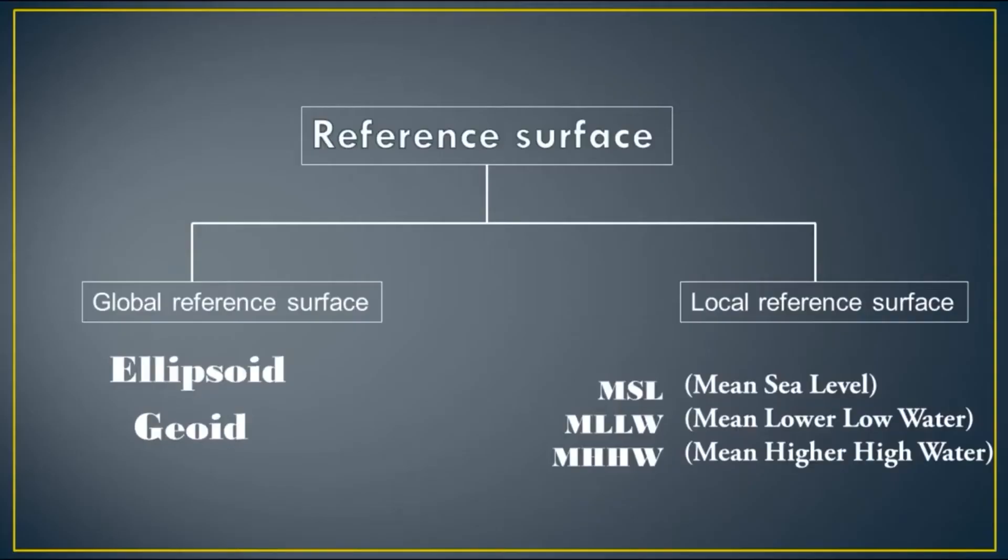In cartography, there are two reference surfaces. First one is global reference surface, and another one is local reference surface. Some examples are mean sea level, mean lower low water, etc.